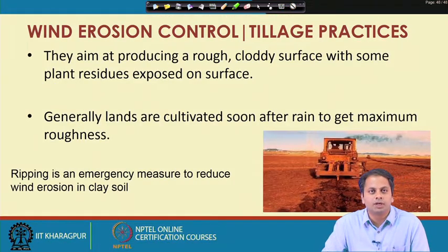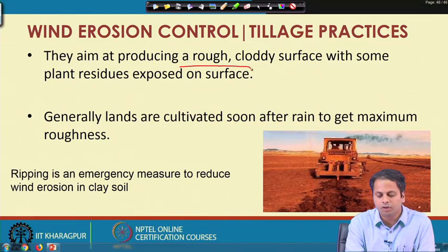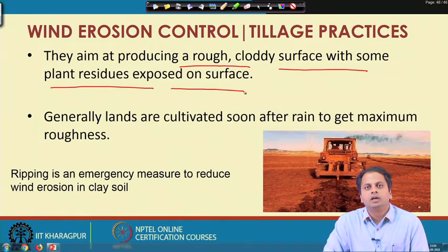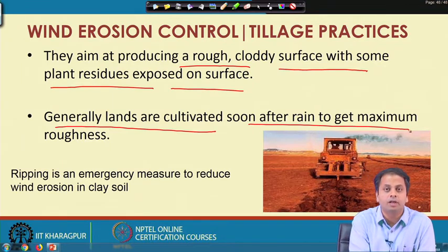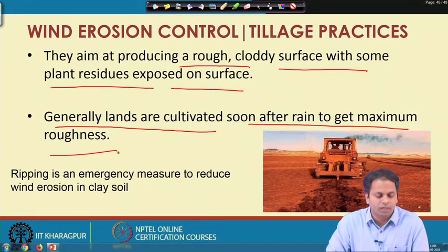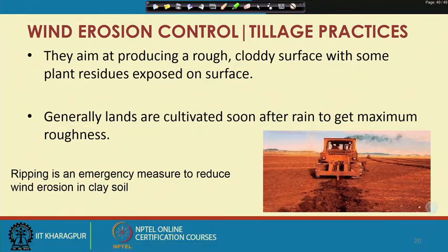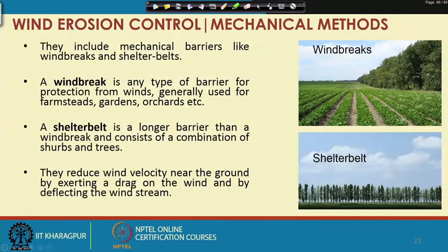By proper tillage operation, the aim should be to create a rough, cloddy surface with plant residues exposed, so the effect of high-velocity wind can be minimized. Lands are generally cultivated soon after rains to get maximum roughness. As an emergency measure, ripping can be used to reduce wind erosion in clay soils. Mechanical measures include planting a series of trees and shrubs on the border of fields so that high wind speed effects are reduced.